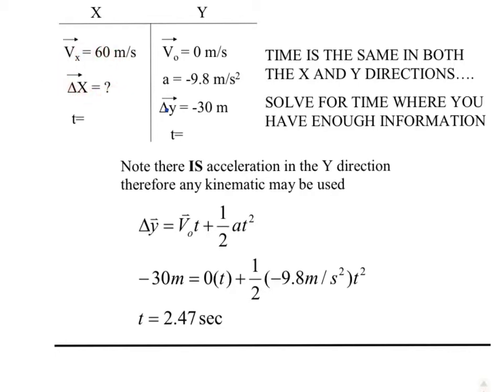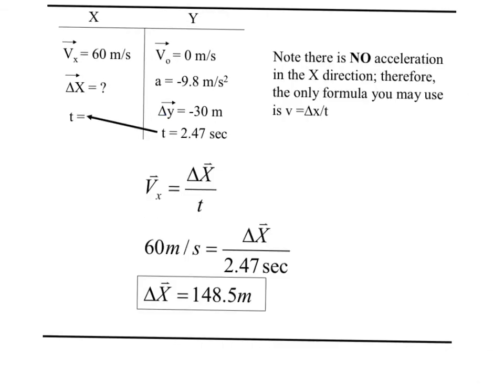First we got to find the time. There is an acceleration in the Y direction, so you can use any kinematic equation. Δy = v₀t + ½at² is usually the easy one to work with because you have no initial velocity. So negative 30 for your y equals ½ negative 9.8 t squared. When you solve for t you get 2.47 seconds. You just do 30 divided by 4.9 and do the square root of it. Once you have your time, 2.47 seconds, obviously the time is the same on the X and Y direction, so you can place it here.